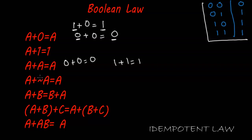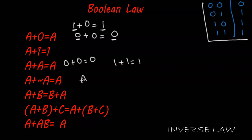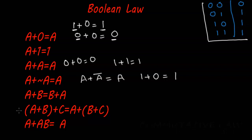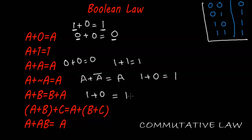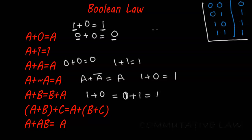Whatever the input is, that is what the output is, so a plus a equals a — this is called the Idempotent Law. Moving forward to the Inverse Law: a plus a-bar equals one, since one plus zero equals one. Moving forward to the Commutative Law: a plus b equals b plus a, so even if we change the order, one plus zero equals zero plus one and both answers are one.